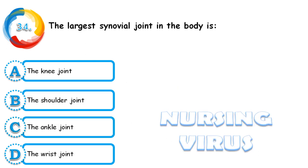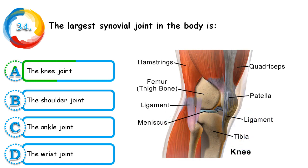Question 34: The largest synovial joint in the body is the knee joint, shoulder joint, ankle joint, or wrist joint. The correct answer is the knee joint — this is one of the largest synovial joints in our body.